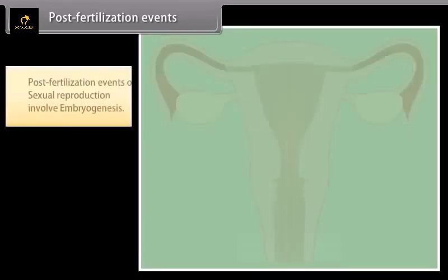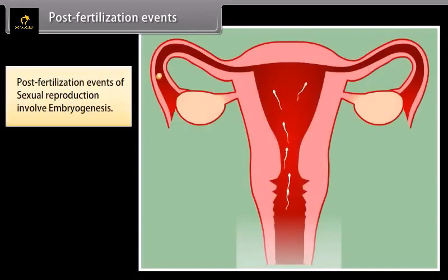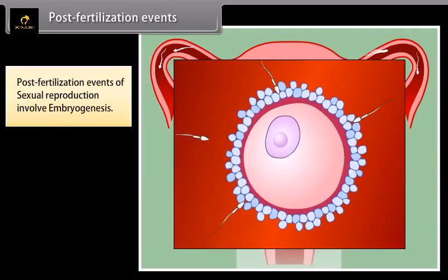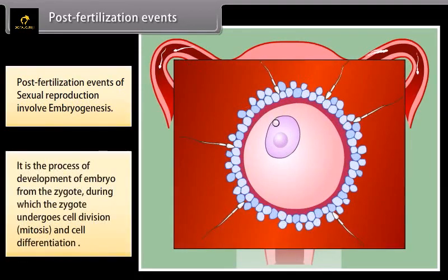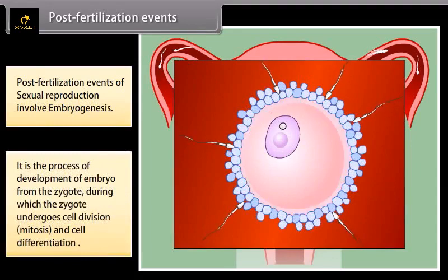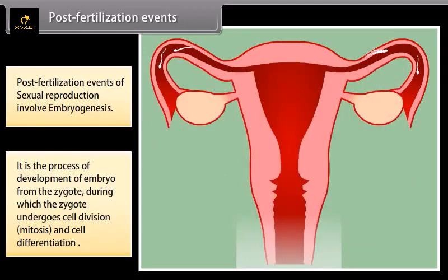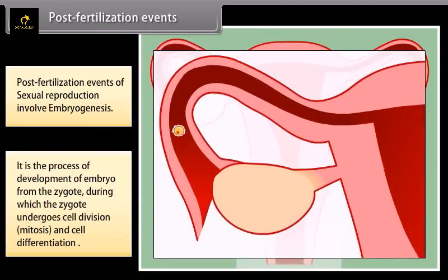Post-fertilization events of sexual reproduction involve embryogenesis — the process of development of an embryo from the zygote, during which the zygote undergoes cell division, mitosis, and cell differentiation, as shown in the diagram.